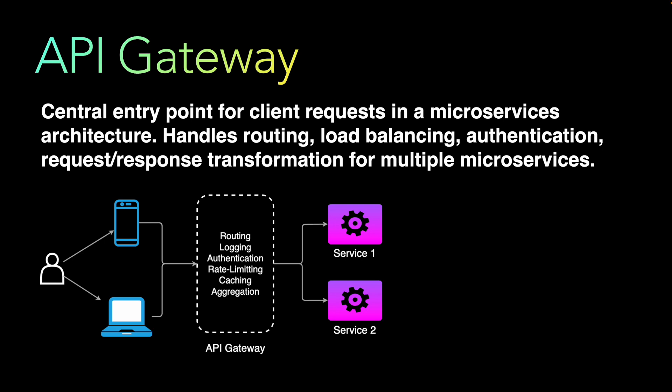The API gateway can enforce security measures and control access based on predefined roles or policies. It also implements rate limiting to control the number of requests a client can make within a specified time frame, which helps prevent abuse, ensures fair usage, and protects the system from being overwhelmed. Additionally, API gateways can implement caching to improve performance and reduce response times by storing frequently requested data.